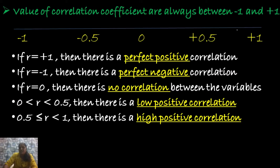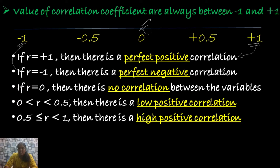If the value of R is equal to plus 1, then we call such type of correlation a perfect positive correlation. If the value of R is equal to minus 1, then there exists a perfect negative correlation between the two variables. If R is exactly equal to 0, then there exists no correlation between the two variables. If R lies between 0 (exclusive) and 0.5 (exclusive), then there exists a low positive correlation between the two variables. If R takes the value from 0.5 (inclusive) to 1 (exclusive), then there exists a high positive correlation between the two variables.